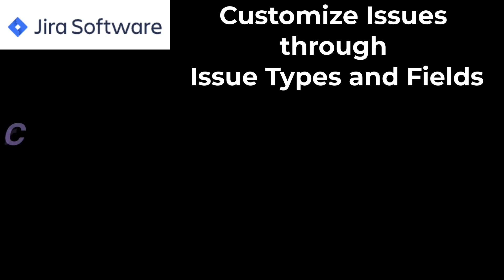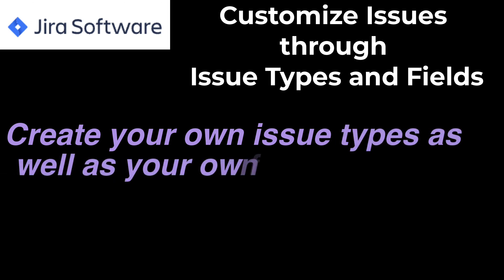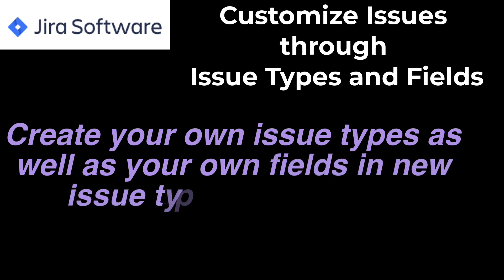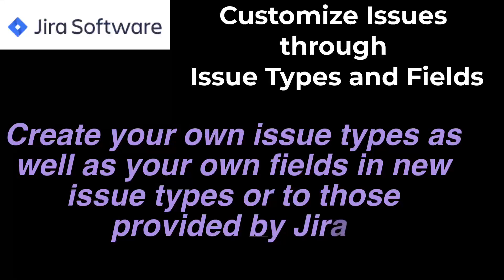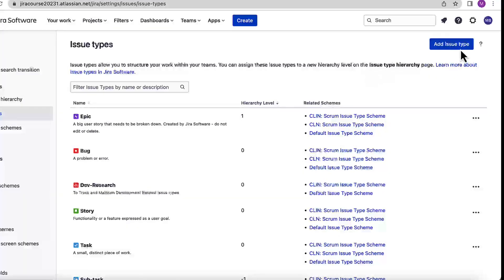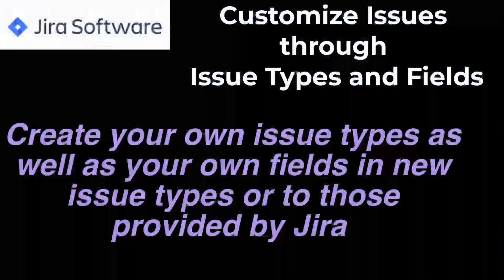Jira allows you to create your own customizable issue types so that you can be very specific while creating issues and fulfilling your project requirements. For example, you can create a special issue type to cater to the needs of a research type of issue. The workflow path of research work is always different than a story or a bug, therefore you can create your own issue type that will have the flow which you want for your research type of work.